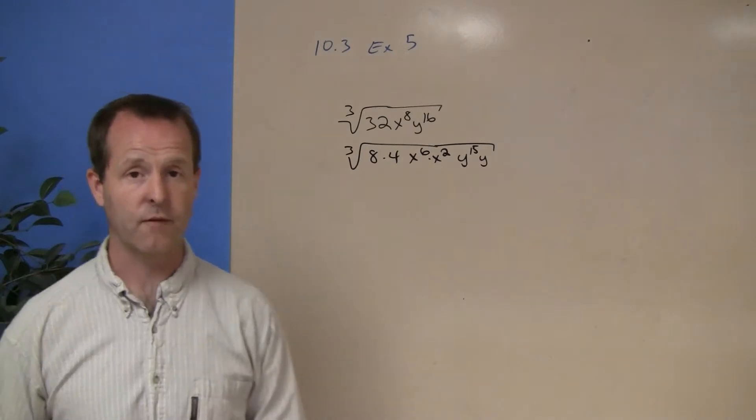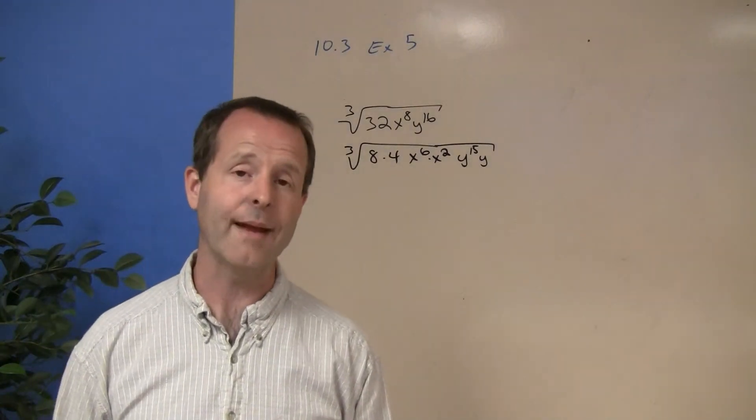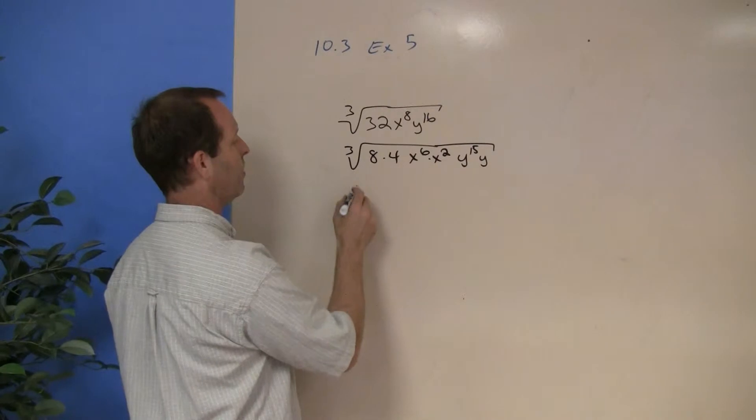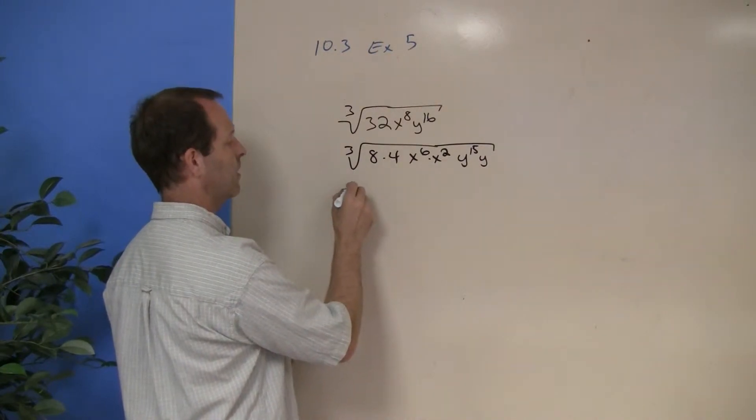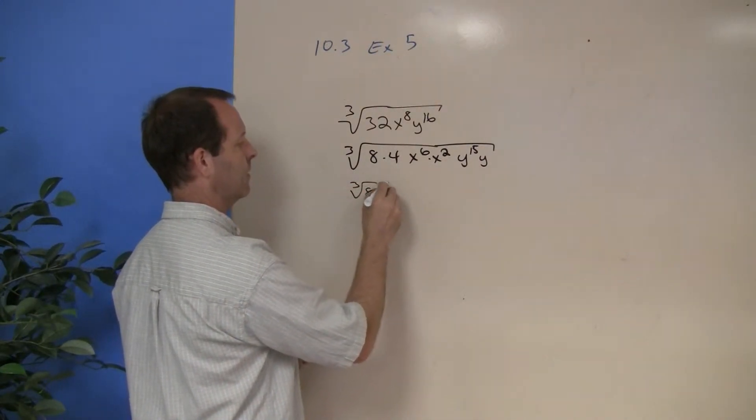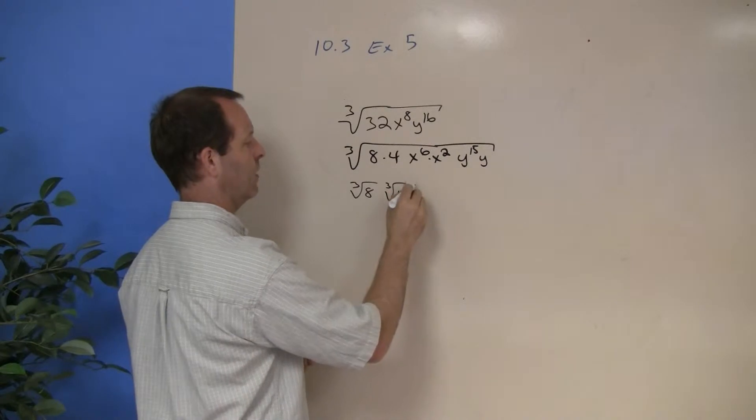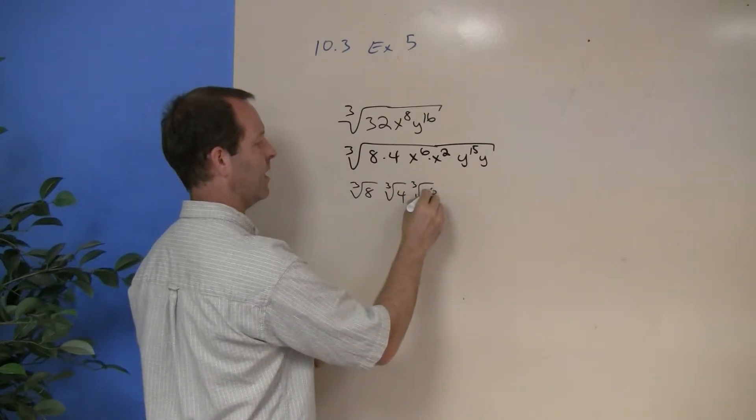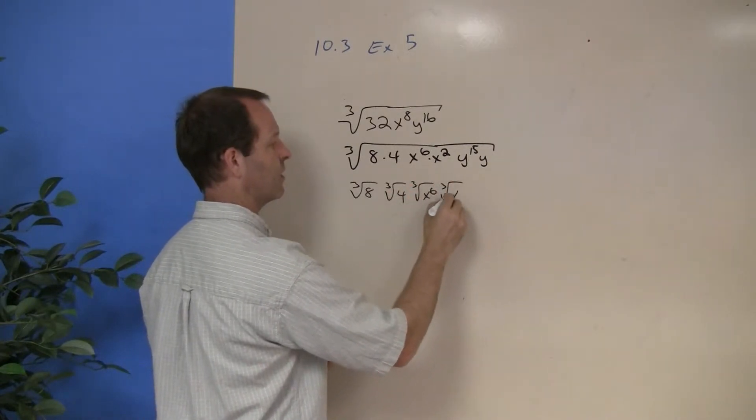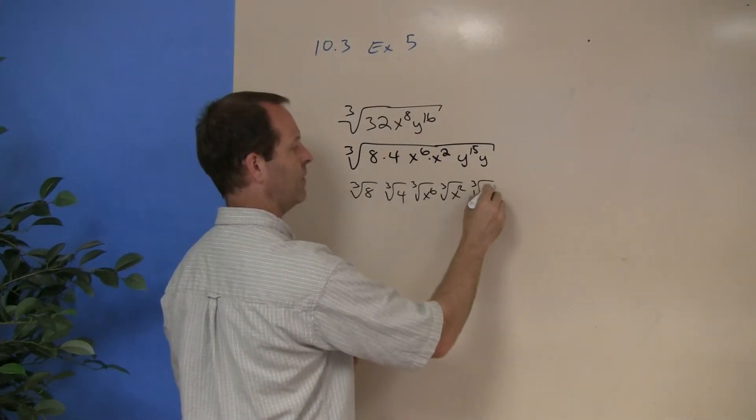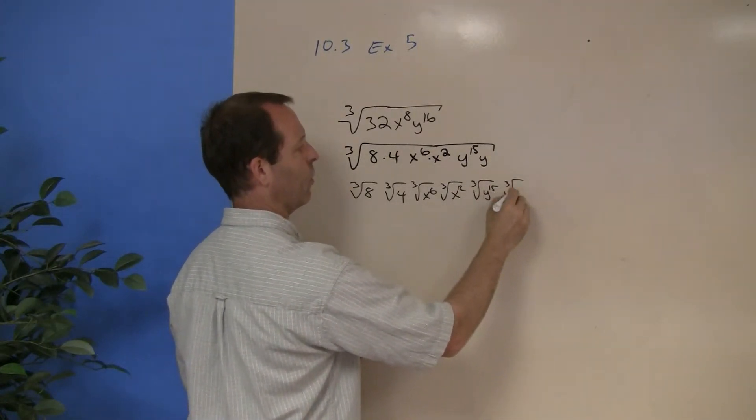So some of those are perfect cubes. Some of those weren't able to be a perfect cube. So put them in their own cube root boxes. The cube root of 8, the cube root of 4, the cube root of x to the 6th, the cube root of x squared, the cube root of y to the 15th, and the cube root of y.